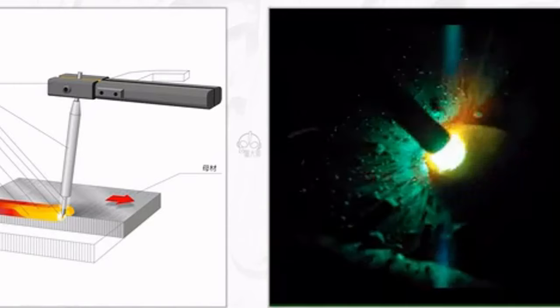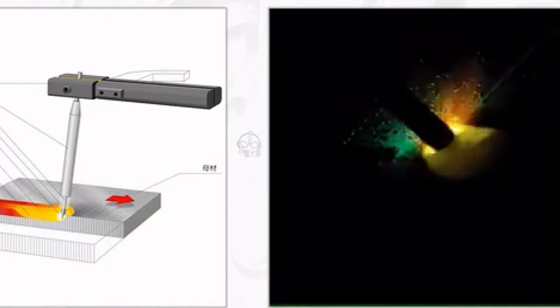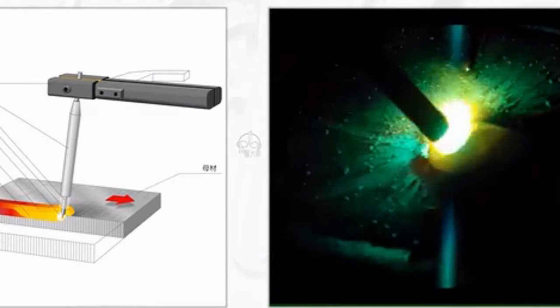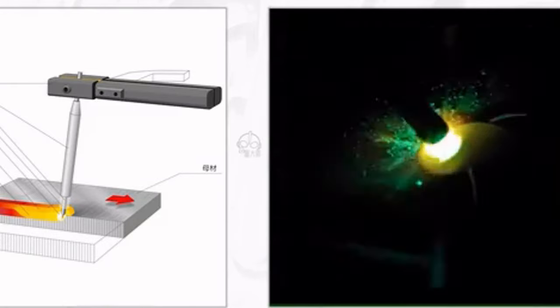The arc welding rod and the base material melt and mix under the high temperature of the arc to form a metal molten rod that fills the weld. When the molten rod cools down, the welding is completed.